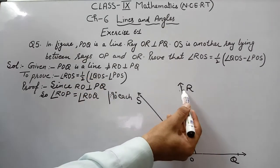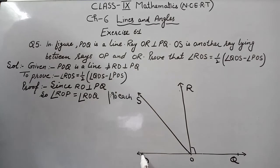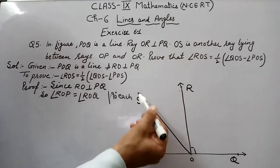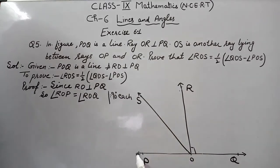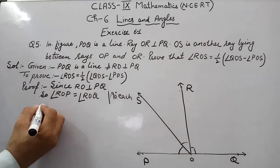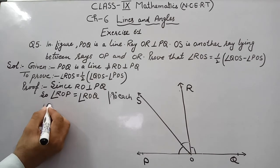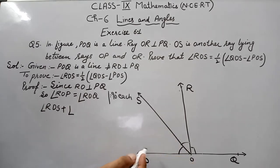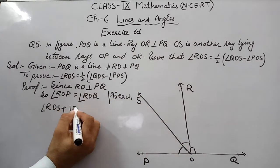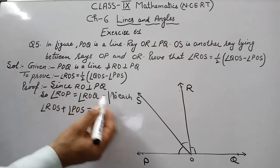So angle ROP, I will write in the next step ROP as angle ROS plus angle SOP. Again, I tell you, I will write ROP angle as angle ROS plus angle POS, because ROP is the sum of this angle and this angle. So I am writing here ROP as angle ROS plus angle SOP, or you can write POS.